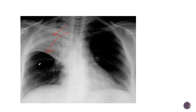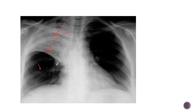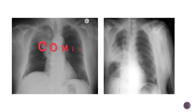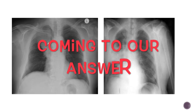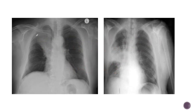We don't see any features of volume loss of the right lung. The right-sided intercostal spaces are equal to the left-sided intercostal spaces, so there is no evidence of crowding of the ribs. The right-sided diaphragm is in normal position and the right hilum is in normal position. So this is a case of right upper lobe consolidation.